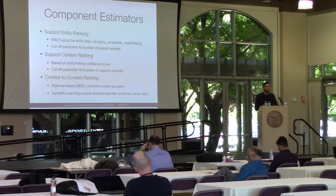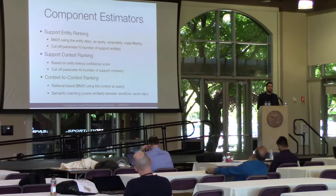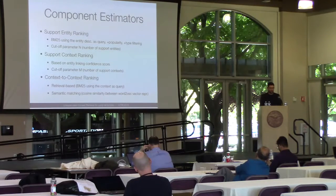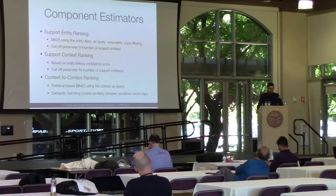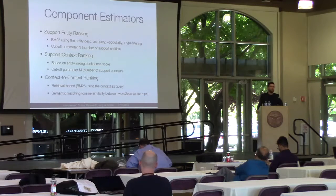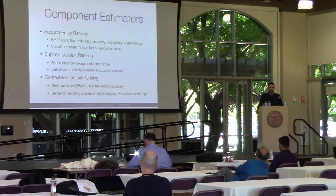The second component is ranking contexts for support entities. Remember that these support entities are well-established entities, so we can annotate the collection using standard entity linking approaches, and use the entity linking confidence score for estimating that probability. The third component is context-to-context ranking: given the supporting context, how similar is it to the context we want to score for the input entity. We can measure similarity using a simple retrieval-based approach like BM25, or — what performs better — semantic matching, where we represent contexts as vectors and measure their similarity.